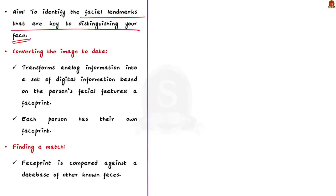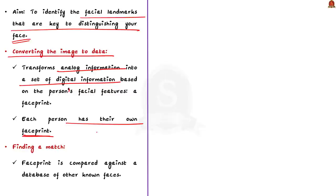The third stage involves converting the image to data: the face capture process transforms analogue information — a face — into a set of digital data based on the person's facial features. This numerical code is called a face print. Just as thumbprints are unique, each person has their own unique face print. The final stage is finding a match: the face print is compared against a database of known faces. For example, on Facebook, any photo tagged with a person's name becomes part of Facebook's database and such data may be used for facial recognition.